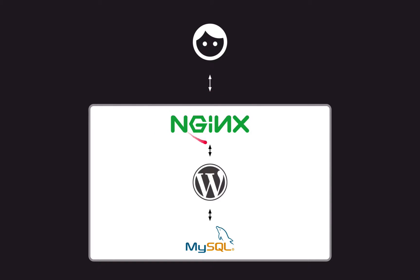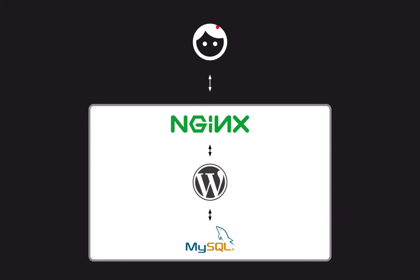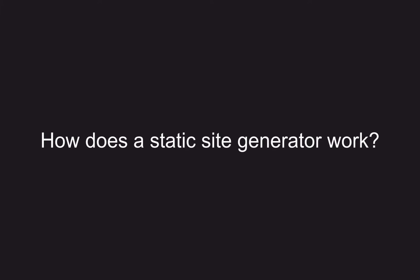The web server forwards the request on to WordPress. WordPress builds the site from a number of templates, gets the content and other site data from the database, and then sends the complete website back to the user.